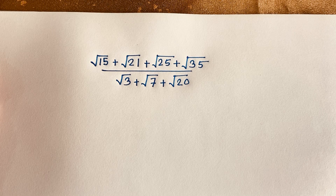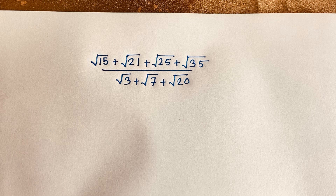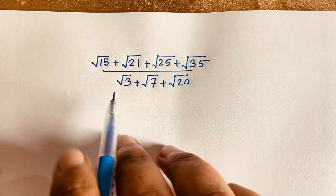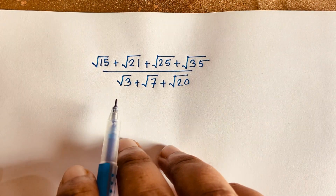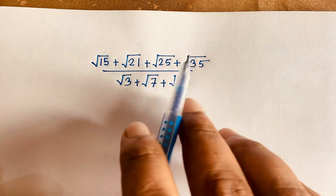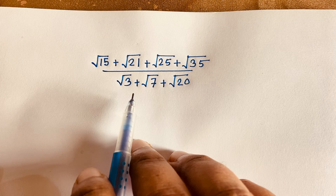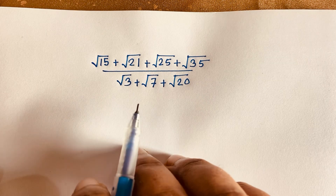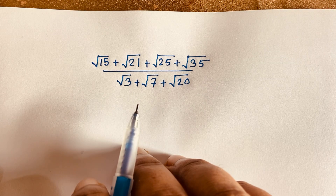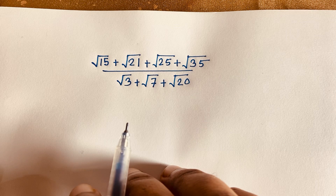Hello everyone. In this video we have solved this interesting radical math question. The question is: square root of 15 plus square root of 21 plus square root of 25 plus square root of 35, all over square root of 3 plus square root of 7 plus square root of 20. Let's see how to solve this radical expression.